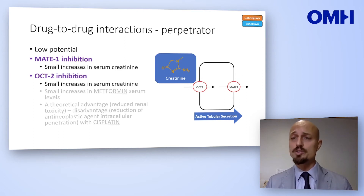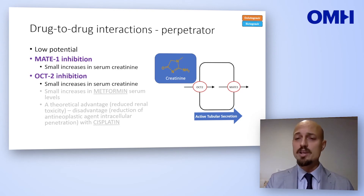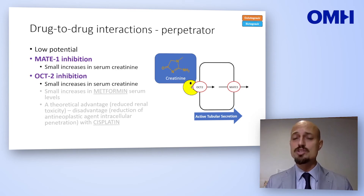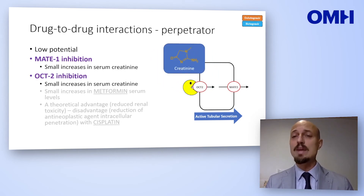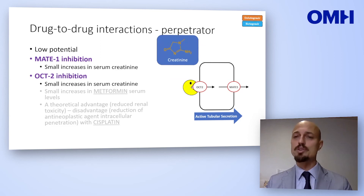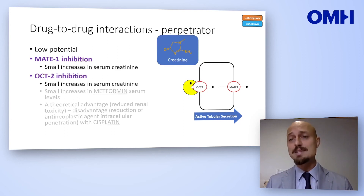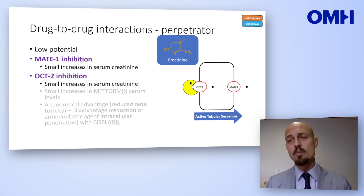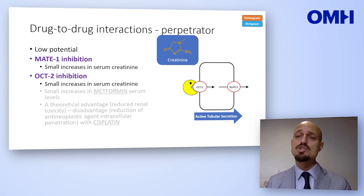These two are transporters that are expressed in several cells but are highly expressed on renal cells. As shown here on the right in the animation, if you block OCT2, some molecules — including creatinine — are not transported across the tubular membrane and so they go back to the serum, and we might note a serum increase in creatinine. This is a known effect, and we see that all these drugs increase creatinine serum concentration, but it's usually between 0.1 and 0.2 mg per deciliter.